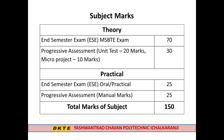The total subject carries 150 marks, in which the End Semester Exam carries 70 marks, and the Progressive Assessment — which contains Unit Test and Micro Project marks — totals 30 marks. The Practical marks, i.e., End Semester Exam Oral or Practical, is 25 marks, and the Progressive Assessment, i.e., Manual marks, is 25 marks, making the total 150 marks.